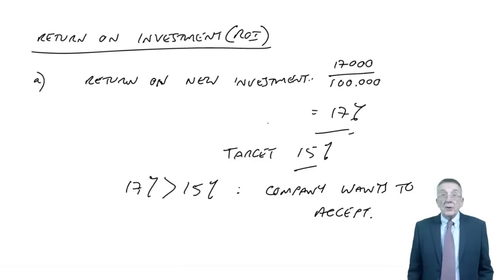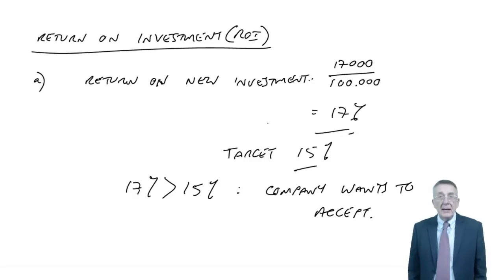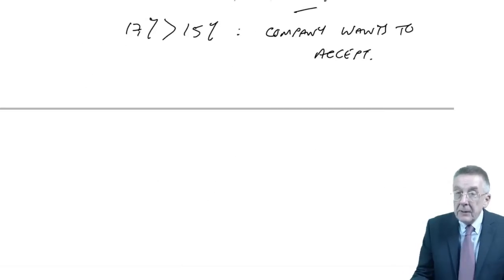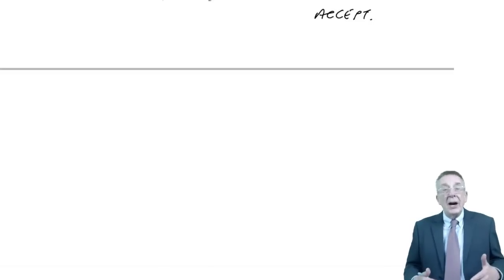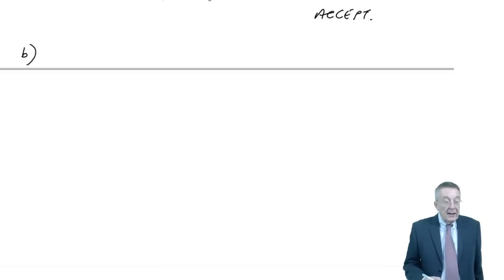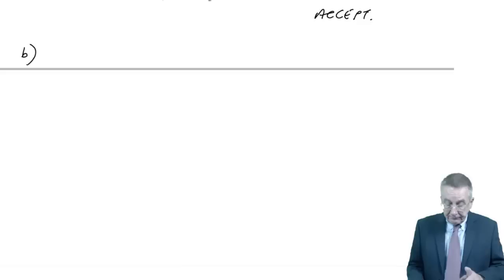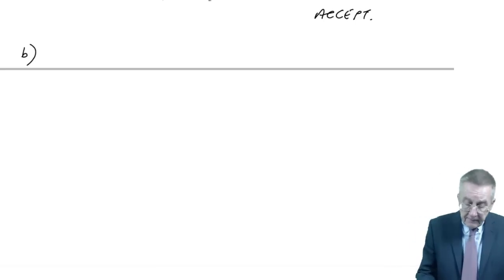However, if we've given the manager autonomy — it's an investment division — I can't just tell him he must accept. That takes away autonomy. I've made him a manager; I'm letting him make decisions. So I have to make sure that the way I measure his performance makes him want to do the investment. Part B asks us to calculate the return on investment for the division with and without the new investment.